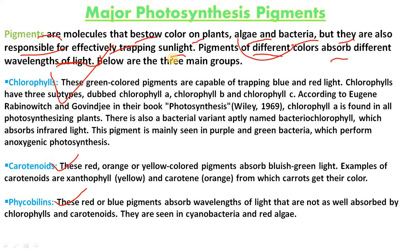Chlorophylls are of two types: chlorophyll a and chlorophyll b, of which the former is present in abundance. The carotenoids are of two types: orange colored carotene and yellow colored xanthophyll. Apart from chlorophyll a and b, chlorophyll c, d, and e are also present. Other photosynthetic pigments are blue phycocyanin and lavender-red phycoerythrin.